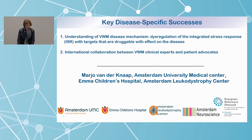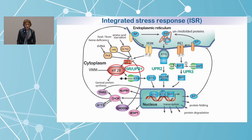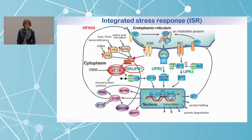I'll discuss the disease-specific key successes, which are understanding of the Vanishing White Matter disease mechanisms and international collaboration. This graph shows beautifully what Vanishing White Matter is about. This is the standard stress response of the body to stresses like viral infections, elevated temperatures, amino acid starvation, and protein misfolding. They all lead to the activation of different enzymes, and these different enzymes do the same thing: they lead to the phosphorylation of another initiation factor, EIF2.